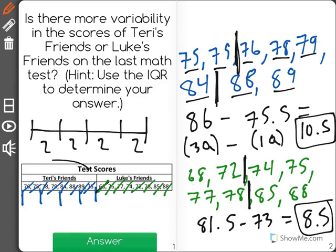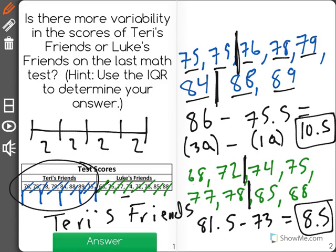So we can see here that Terry's friends have greater variability in their data than do Luke's friends when using the IQR or the interquartile range as our measure of variability.